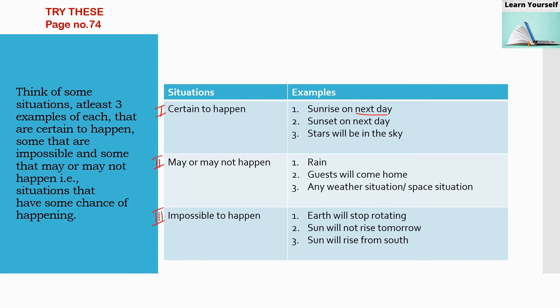So these are some of the situations which will tell us that some situations are certain to happen, some situations may or may not happen, and some situations are impossible to happen.